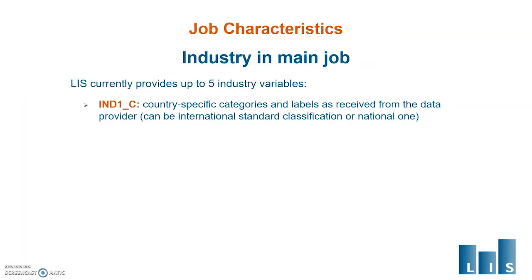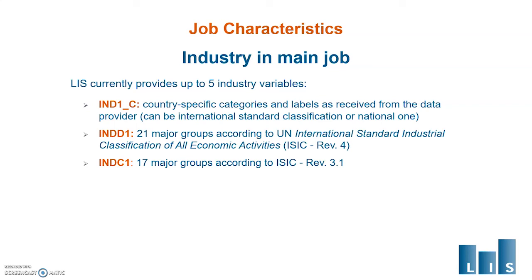LIS currently provides up to five industry variables. Industry1_C is a country-specific variable at the most detailed level received from the data provider and can be either an international or national classification. IndustryD1 has 21 major groups according to the UN International Standard Industrial Classification of All Economic Activities, ISIC4, and is provided for recent data, mostly starting around year 2008. IndustryC1 has 17 major groups according to ISIC3, and is provided for data prior to using ISIC4. Usually either IndustryC1 or IndustryD1 is provided, depending on the classification used in the original data.